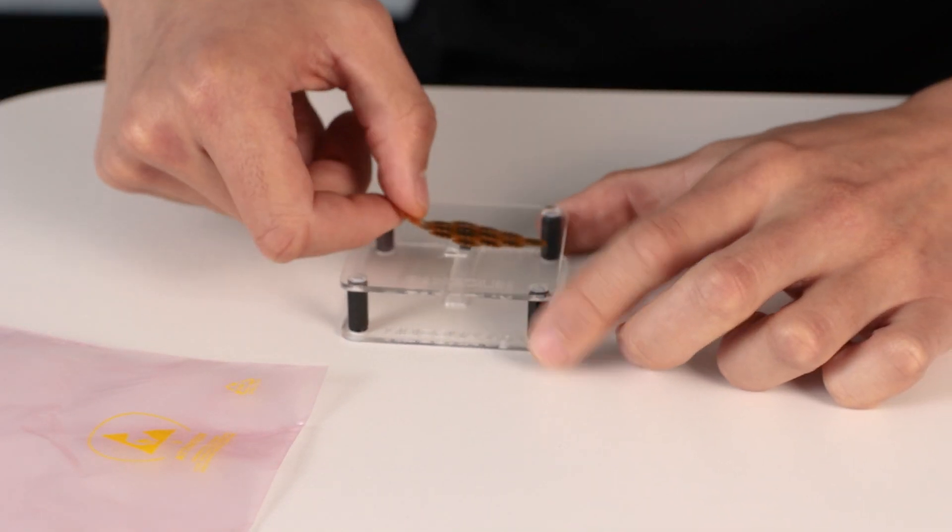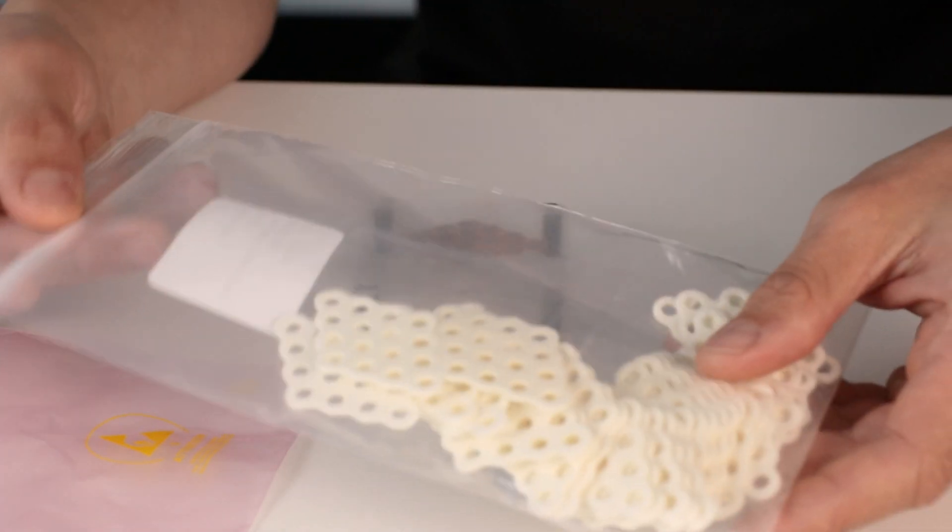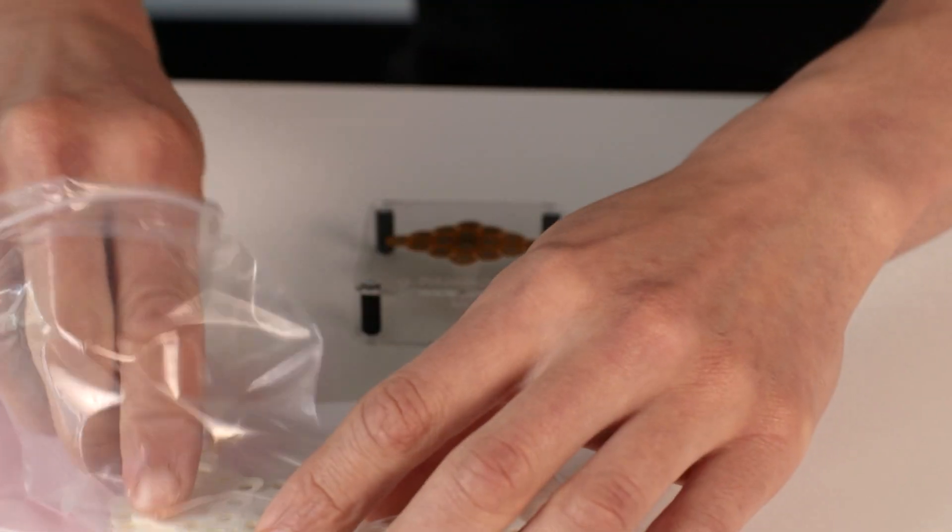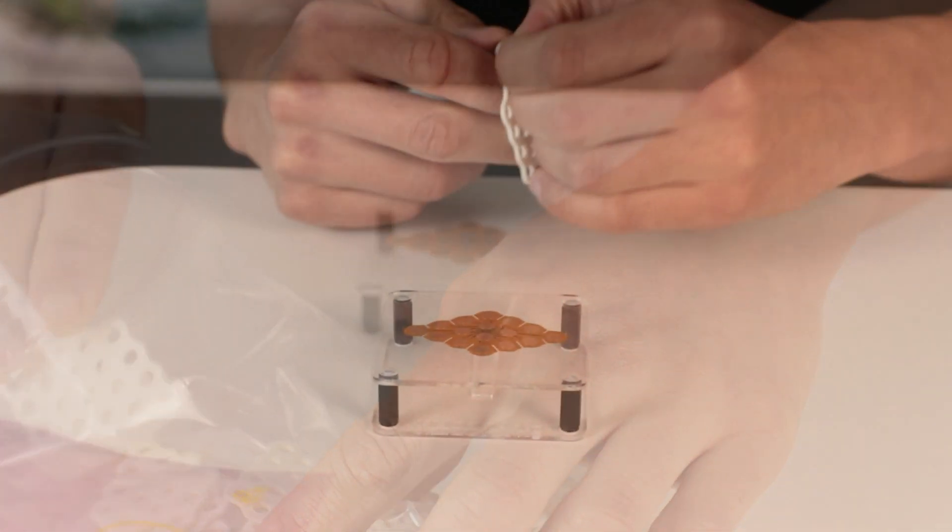The first thing we have to do is place the adhesive that will stick to the skin onto the grid. So you take a new adhesive, slip it off like this.